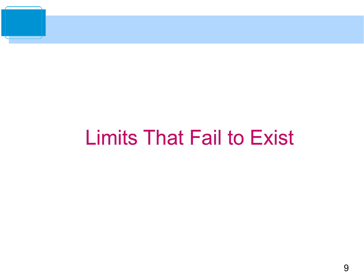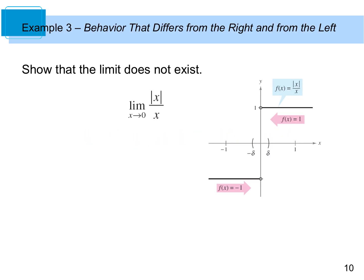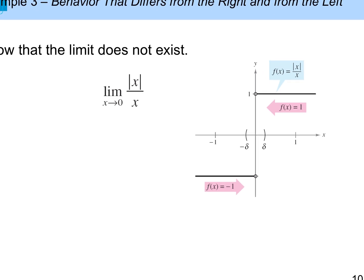However, we will have limits that don't exist. In Example 3, looking at it graphically: as our x values go towards 0, the y value from the left approaches 1 and from the right approaches negative 1. Since these approach different numbers, our limit does not exist. If your graph approaches a different y value from the left versus the right, then your limit does not exist.